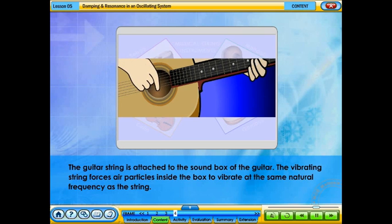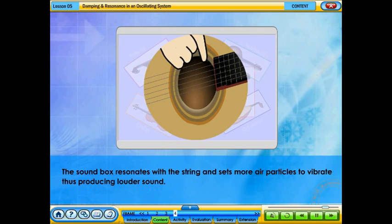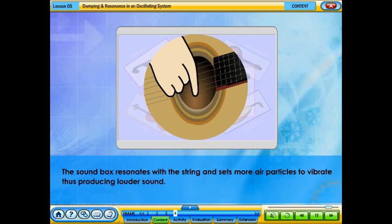The guitar string is attached to the sound box of the guitar. The vibrating string forces air particles inside the box to vibrate at the same natural frequency as the string. The sound box resonates with the string and sets more air particles to vibrate, thus producing louder sound.